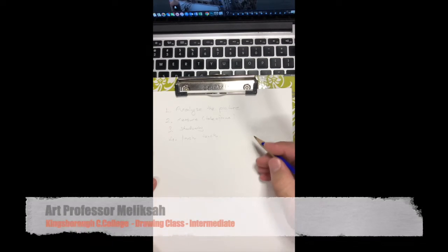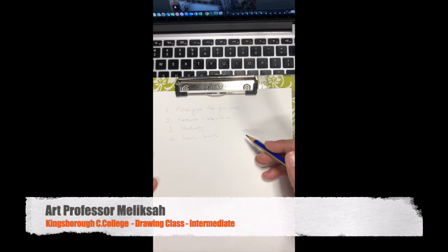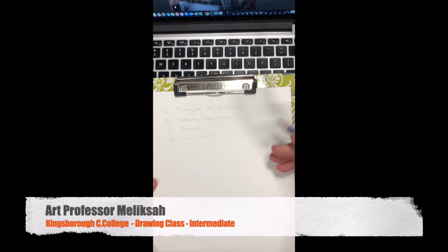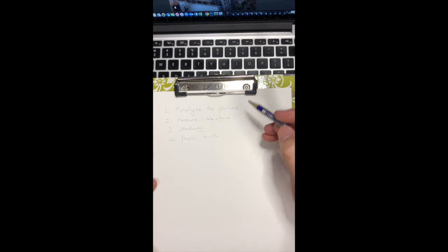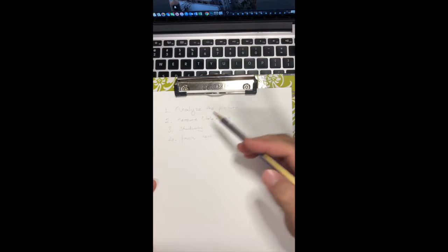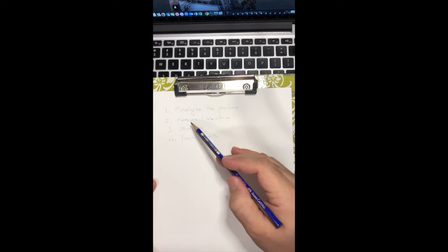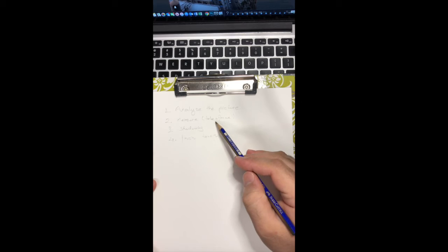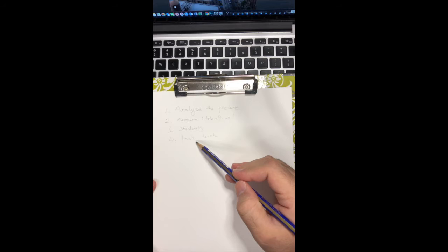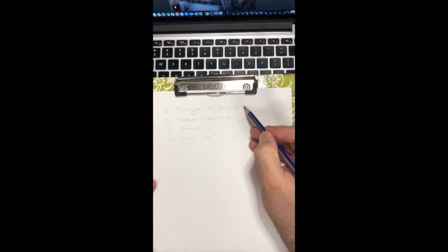Hi guys, welcome to my YouTube channel. Now I'm introducing the intermediate class. I've summarized the previous lessons before — the drawing the picture. We know the third or fourth steps: the first one is to analyze the picture, second one is measure, we talk about the frame technique we learned in previous lessons, and shadowing and finish touch.